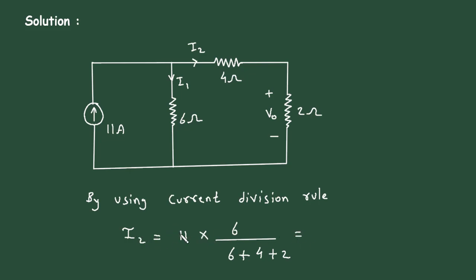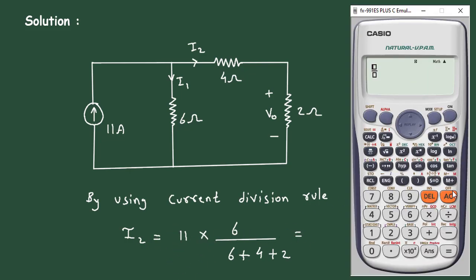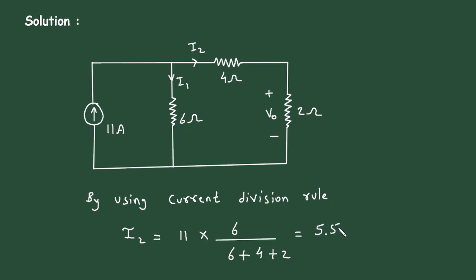This will be the value of I2. Now we will solve this. It will be 11 multiplied by 6 divided by 6 plus 4 plus 2, which equals 5.5 ampere.